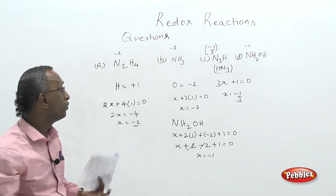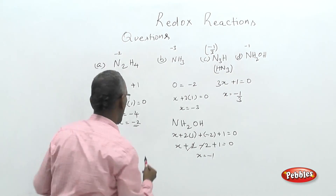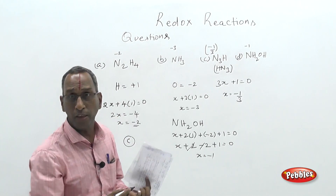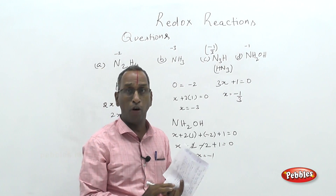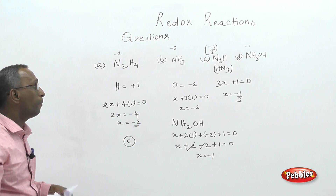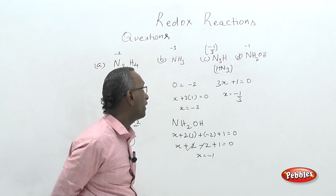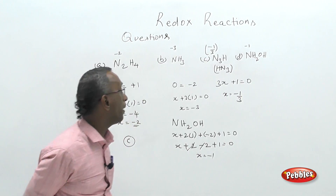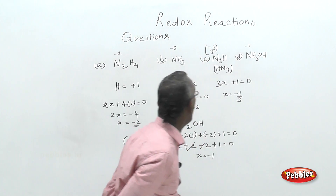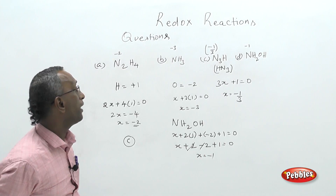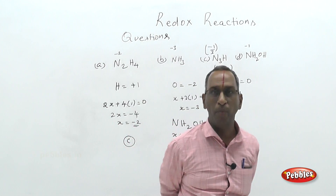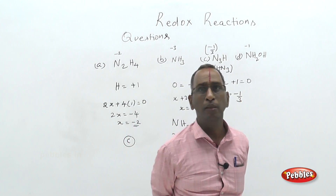Out of the four compounds — hydrazine, ammonia, hydrogen azide, and hydroxylamine — only hydrogen azide (HN₃) gives nitrogen the maximum oxidation state of −1/3. Choice C is the correct answer for this question.